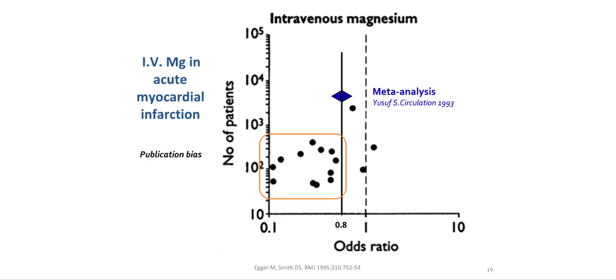Now consider the following classic example. Intravenous magnesium was considered to be beneficial in patients who suffer from acute myocardial infarction. In fact, when systematic reviewers looked at the effects of intravenous magnesium on mortality in trials, they observed the following.